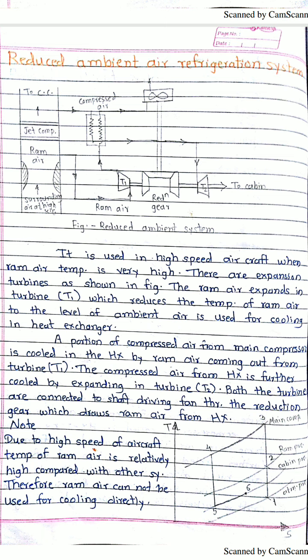The two turbines are connected to a shaft driving a circulation fan through the reduction gearbox, so the turbine work output powers the fan. Due to the high speed of the aircraft, the ram air temperature in this system is relatively high compared to other systems — the ambient temperature is already elevated. If the existing temperature is 60 to 70 degrees Celsius, ramming can raise the ram air temperature up to 100 degrees Celsius, which is why this system is used in high-speed aircraft.